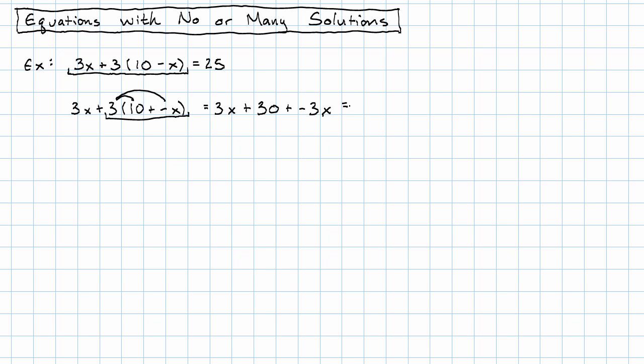Oh, 3x plus negative 3x plus 30. That's 3x plus negative 3x. Those are opposites. That's just 0. So we're just left with 30.